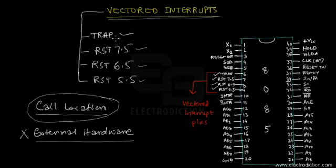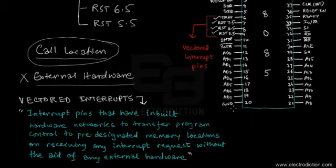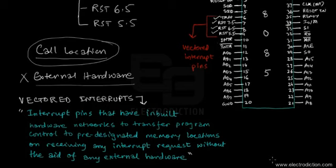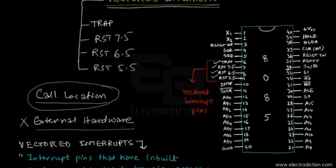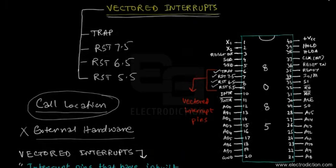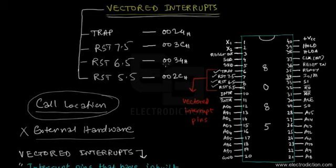No external hardware is needed to transfer the program control, and that is why they are referred to as vectored interrupts — their call locations are set from the beginning with the aid of inbuilt hardware networks. They are simply vectored to predefined memory call locations. We can summarize: vectored interrupts are interrupt pins with inbuilt hardware networks to transfer program control to pre-designated memory locations on receiving any interrupt request.